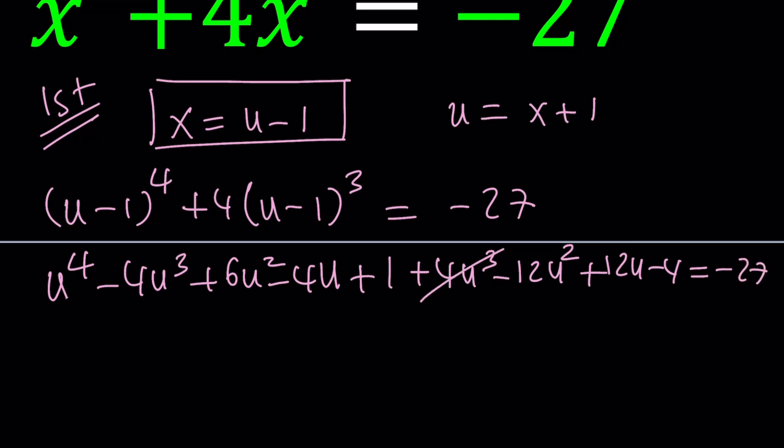As you can see, u cubed is going to cancel out, leaving us with a quartic equation without the cubic term, which is a depressed quartic: u to the fourth minus 6u squared plus 8u plus 24 equals 0 after rearranging all the terms.